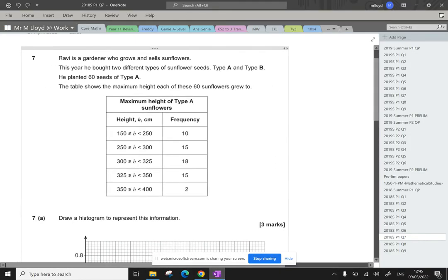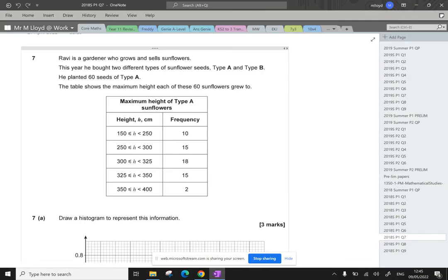Ravi is a gardener who grows and sells sunflowers. This year he bought two different types of sunflower seeds, A and B. He planted 60 seeds of type A. The table shows the maximum height each of these 60 sunflowers grew to.